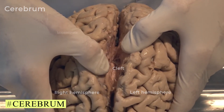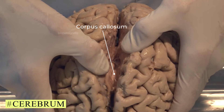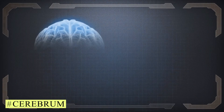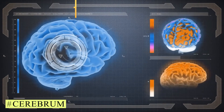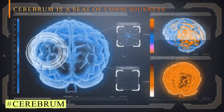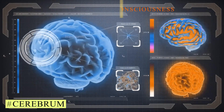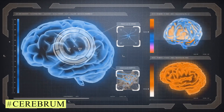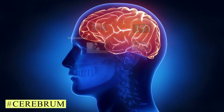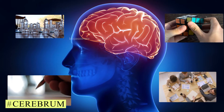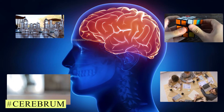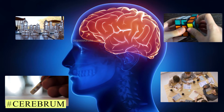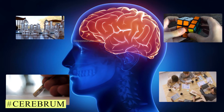Both hemispheres are connected by a tract of nerve fibers called the corpus callosum. The cerebrum is the seat of consciousness because it has the centers for intelligence, imagination, emotions, reasoning, and willpower. The cerebrum also stores information gained through the sense organs.